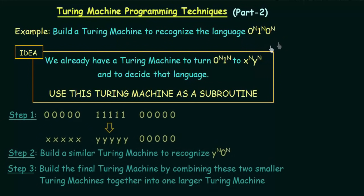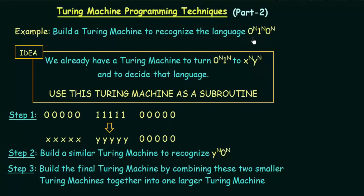Here are the steps. In the first step, we have a string of the form 0^n 1^n 0^n — for example, 5 zeros followed by 5 ones followed by 5 zeros. It lies in this language and we need to make the Turing machine accept it. What we will do is consider just the first part of the task — the 0^n 1^n portion — and leave the rest of the zeros as they are for now.